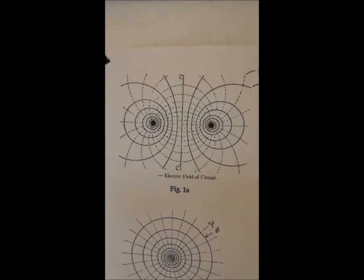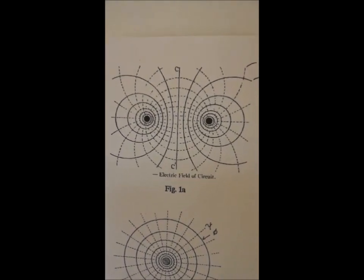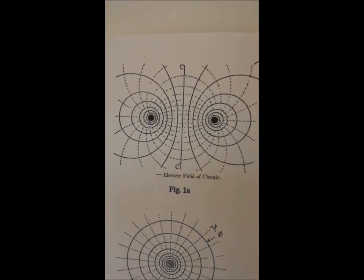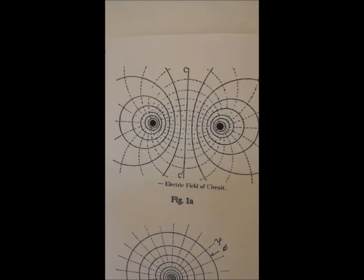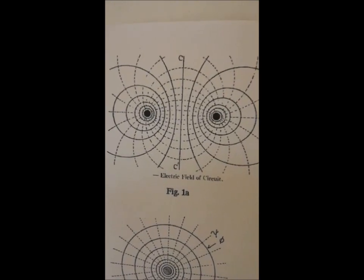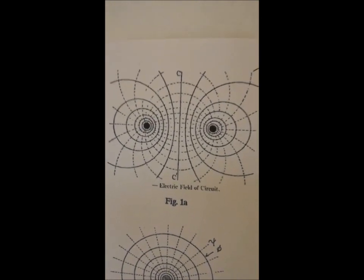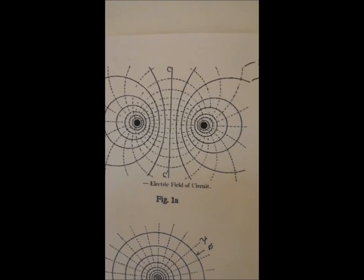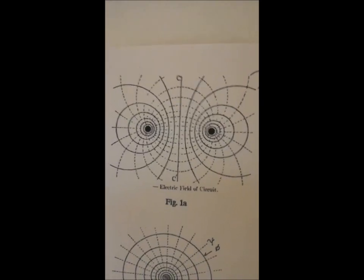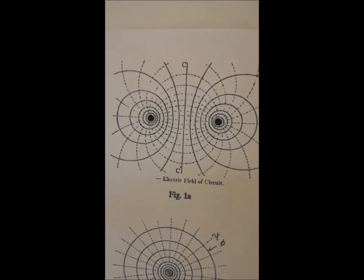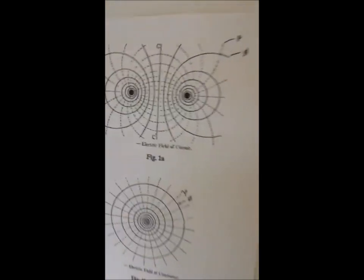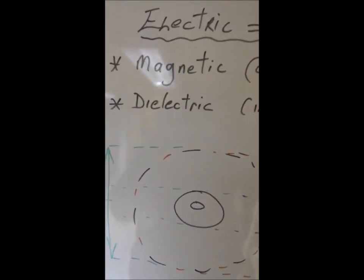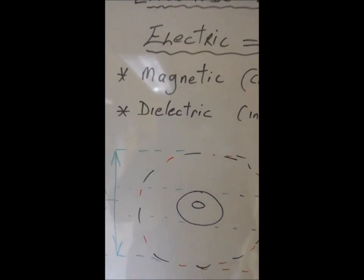If you notice there's dotted lines there. The dotted lines represent dielectric, so the continuous line is the magnetic field. They cannot be separated. The mystery of electric is there's a lot of hybrids of electric which incorporates static.